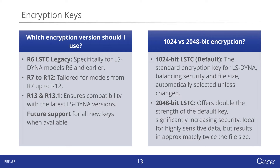Regarding the strength of encryption, it's a matter of your personal or organizational security needs. A 24-bit key, although less robust, will result in smaller encrypted file sizes, which can be beneficial for handling and storage. On the other hand, a 48-bit key offers heightened security at the expense of larger file sizes. It's about balancing security with practicality — stronger encryption for sensitive data, or a lighter approach for less critical information.